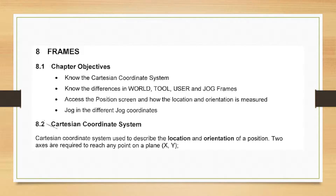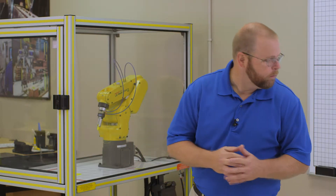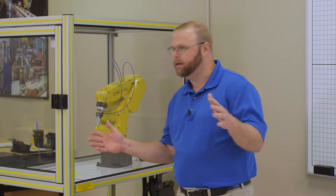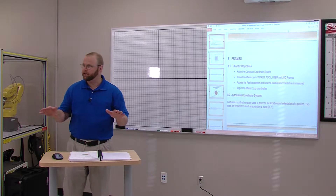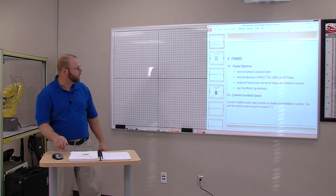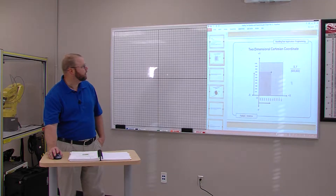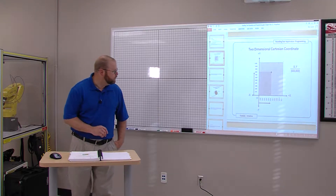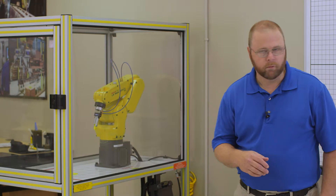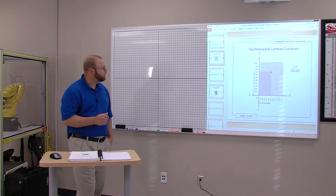The Cartesian coordinate system is used to describe the location and orientation of a position. Two axes are required to teach any point on a plane — that's X and Y. That's a flat, two-dimensional plane. We start from a known position and move so far in each axis, X and Y, and that gives us our two-dimensional position.